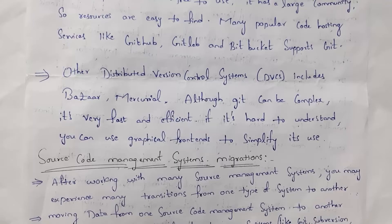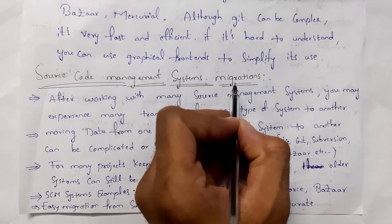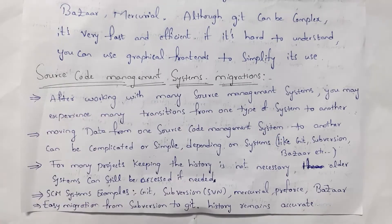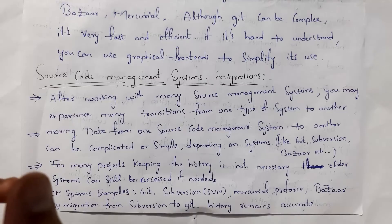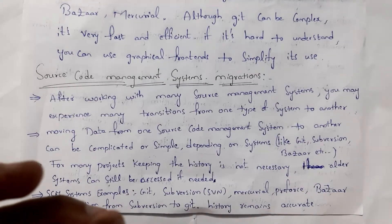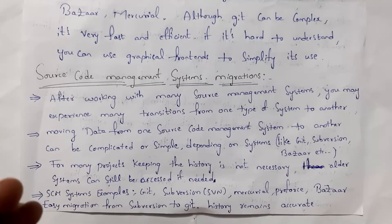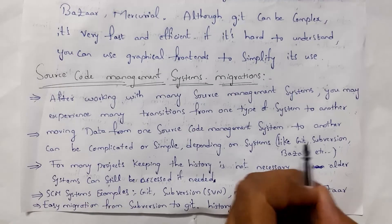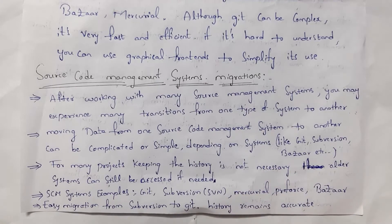If Git commands are hard to understand, you can also use graphical frontends to use Git. Migrations mean transferring something from one place to another. Source code management system migration means moving data from one SCM to another. After working with many source code management systems, there are situations where you need to transfer your data from one system to another.